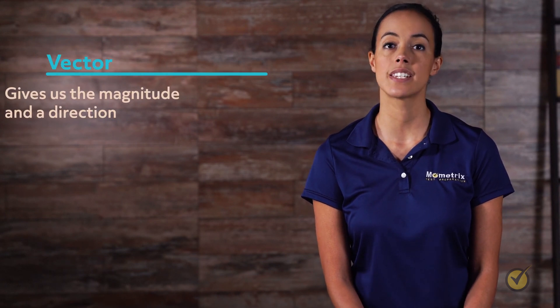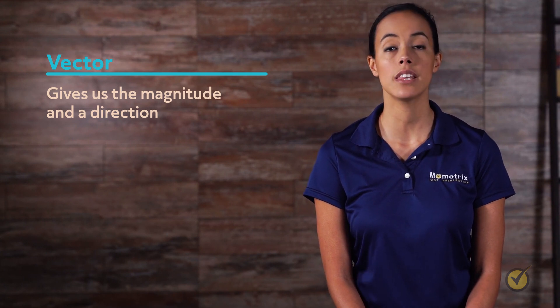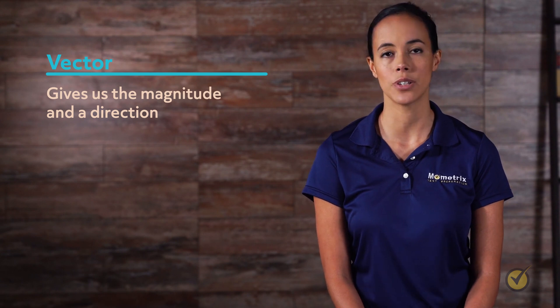A vector gives us the magnitude and a direction. The magnitude is the total displacement and the direction is an arrow pointing from the initial location to the final location.